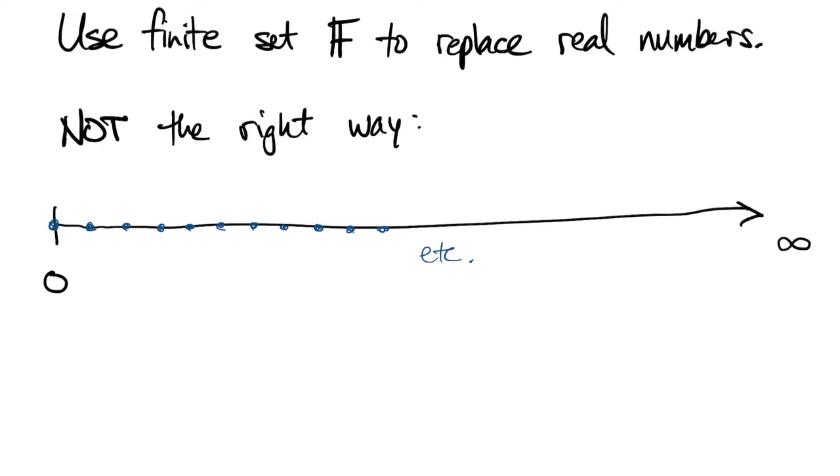For example, if the spacing was a quarter, then here's the number one, and the next number in this set, past one, would be 1.25.